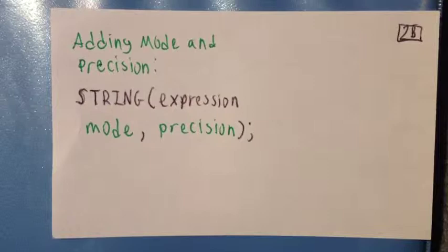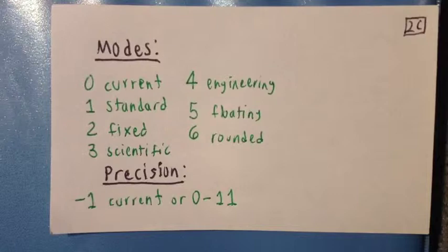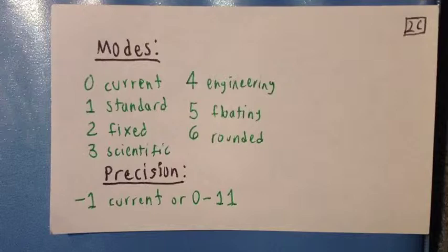By adding two more arguments or codes, you can tailor the way the results are displayed by mode and precision. For mode, you can specify zero to take on the current mode that you have set up in the home settings, or you can dictate what mode you want. One for standard, two for fixed, three for scientific, four for engineering, five for floating, and six for rounded.